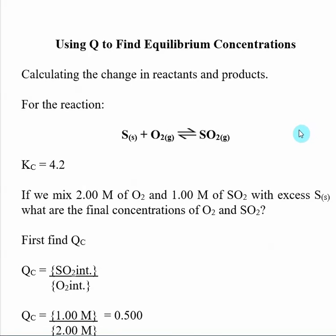Now that we understand that we can use Q to find what direction a reaction must go to reach equilibrium, let's take it one step further and actually find out how far the reaction needs to go to reach equilibrium, and in doing that we can find the equilibrium concentrations of the species involved.